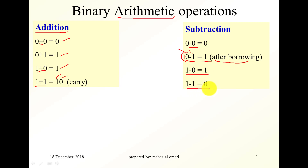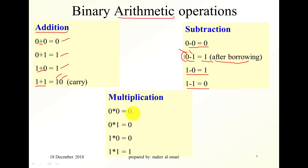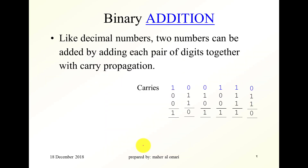The multiplication rules: zero multiplied by zero is zero — actually, anything multiplied by zero is zero. One multiplied by one is one. Now let's look into binary addition. Like decimal numbers, two binary numbers can be added by adding each pair of digits together with carry propagation.